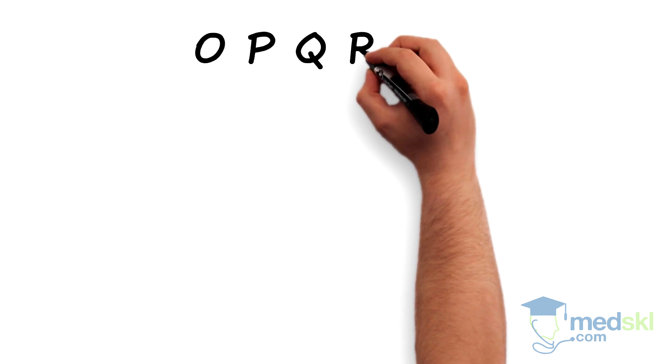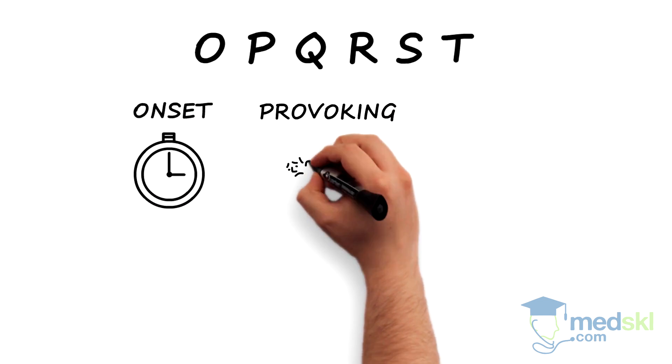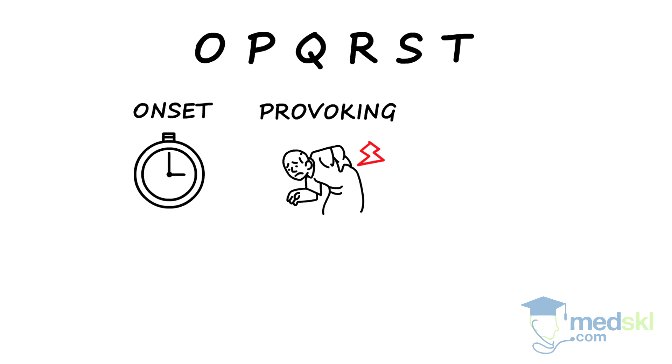The tool OPQRST can be helpful as an outline when taking a history of the symptom. O for Onset - when did it start? P for Provoking - what makes it better or worse?